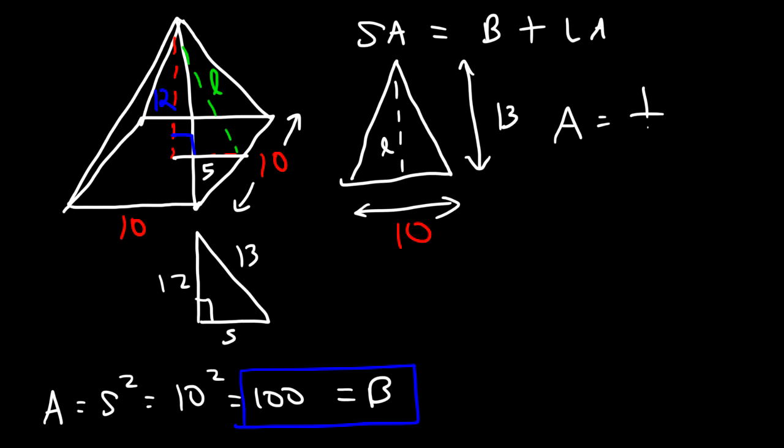So the area is going to be one half base times height. So the base is 10. The height is 13. Half of 10 is 5. And 5 times 13 is 65. So that's the area for one triangle.